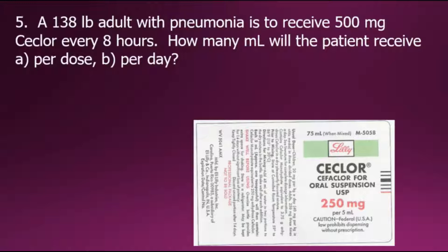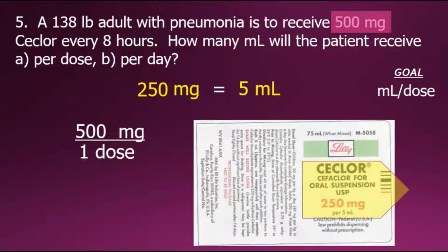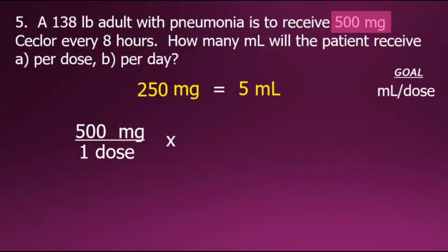In this next problem, a 138-pound adult with pneumonia is to receive 500 milligrams of Ceclor every eight hours. How many milliliters will the patient receive per dose and per day? We'll set milliliters per dose as our goal. The doctor's order is for 500 milligrams, expressed as a fraction. Looking at the medication label, we see 250 milligrams per 5 milliliters, which we'll use to convert from milligrams into milliliters.